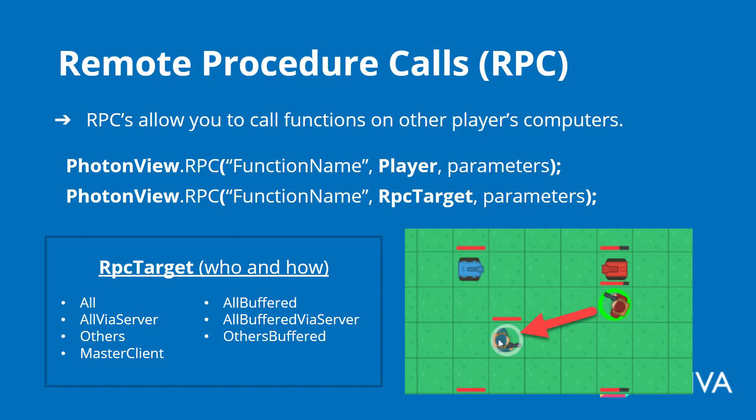The other way is sending it to an RPC target. This is not sending it to an individual person, but to a group of people in a specific way. Here are all the different RPC targets: All Via Server, Others, MasterClient, All Buffered, All Buffered Via Server, and Others Buffered. 'All' executes the function instantly on your computer and sends it to everybody else in the room. 'All Via Server' sends it up to the server, which then tells everybody including you to call that function. 'Others' sends it to everybody except you. 'MasterClient' sends it to the master client.